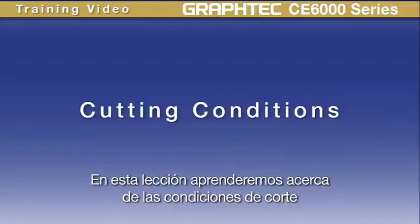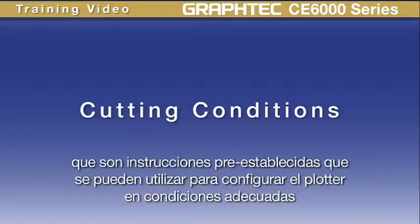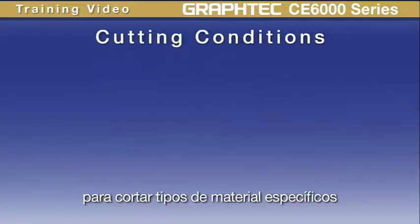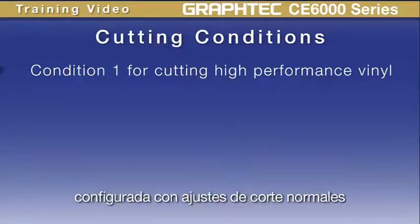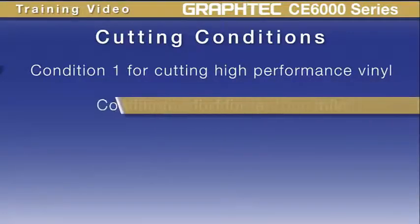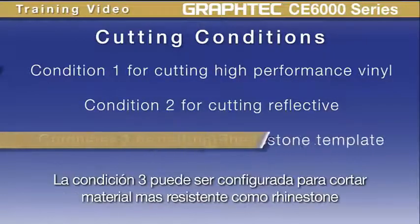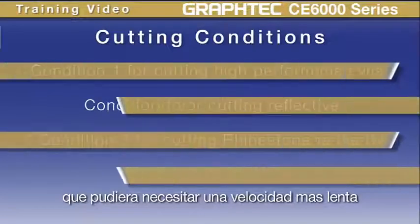In this lesson, we'll learn about the cutting conditions. Cutting conditions are like cutting presets that can be used to set the plotter to the perfect condition for cutting specific types of material. For instance, condition 1 may be set up for cutting high performance vinyl with normal cut settings. Condition 2 may be set up for cutting reflective vinyl which may need a higher force. Condition 3 may be set up to cut rhinestone pattern material that may need a slower speed, and so forth.